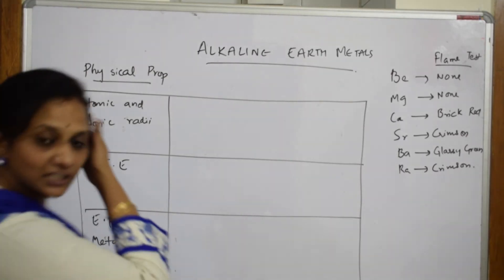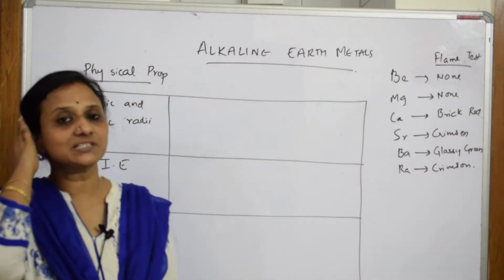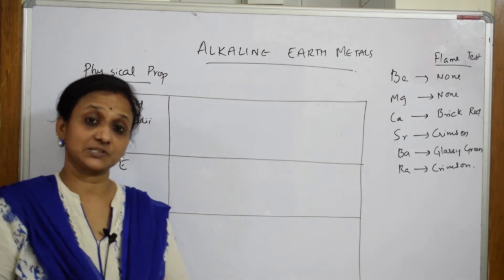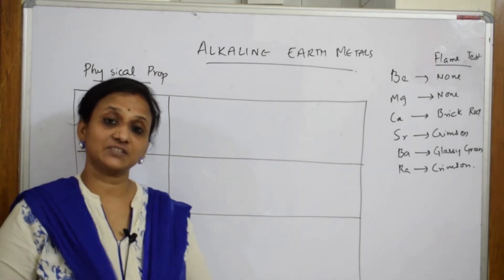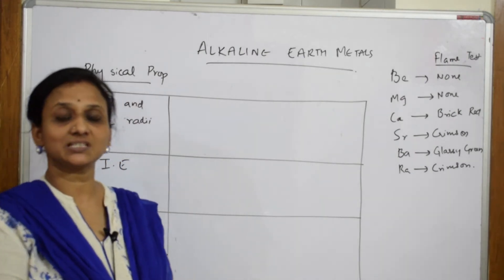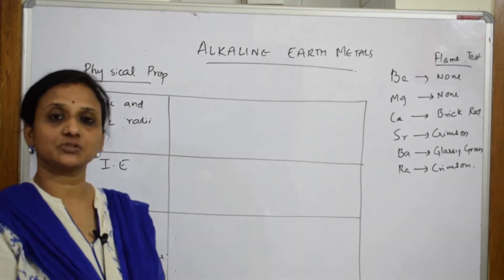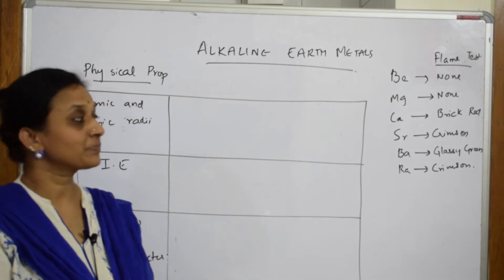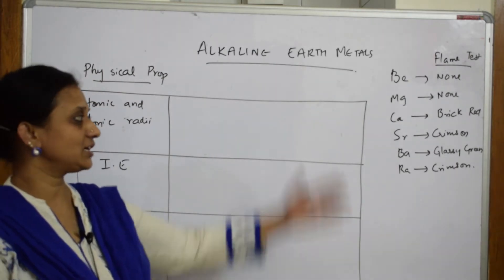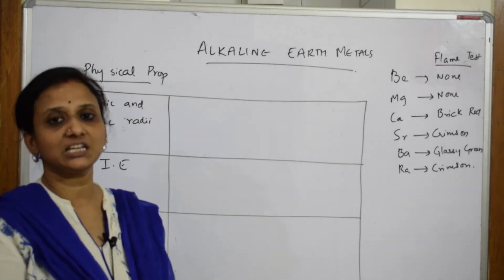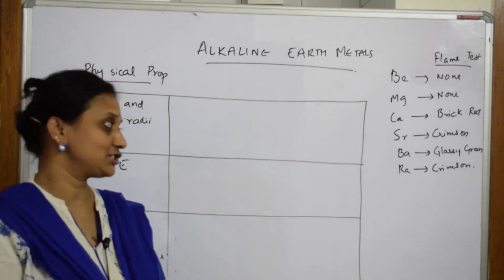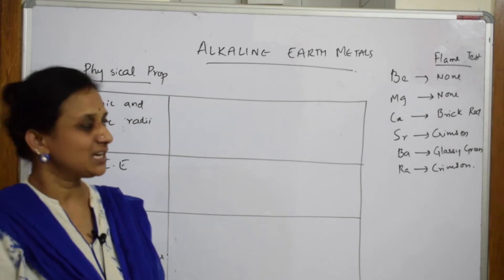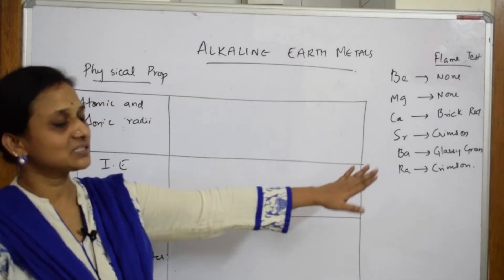Let's come back after alkali metals and learn alkaline earth metals. Once we are done with alkaline earth metals, we'll start solving multiple choice questions. Under alkaline earth metals, we have beryllium, magnesium, calcium, strontium, barium, and radium. Flame test colors are given — just go through them once.